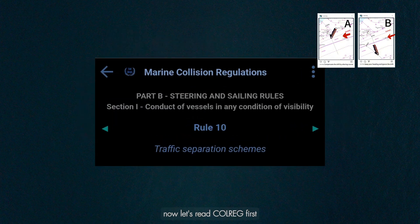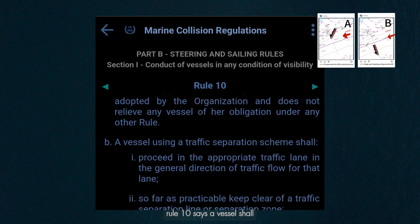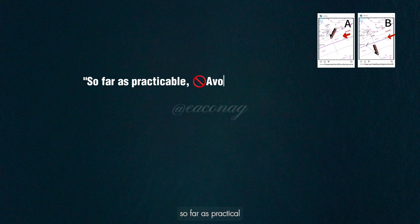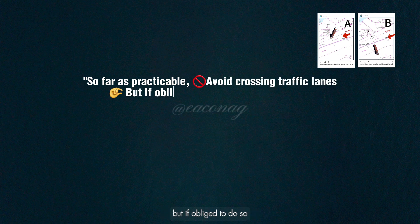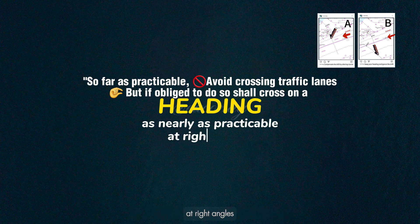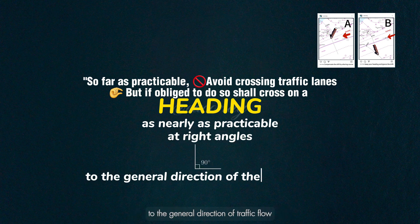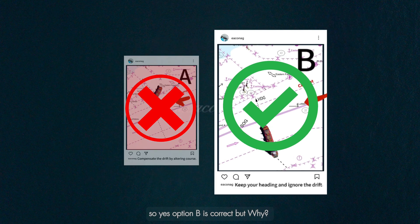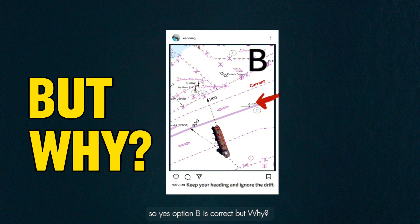Now, let's read COLREG first. Rule 10 says a vessel shall, so far as practicable, avoid crossing traffic lanes, but if obliged to do so, shall cross on a heading as nearly as practicable at right angles to the general direction of traffic flow. So yes, option B is correct.